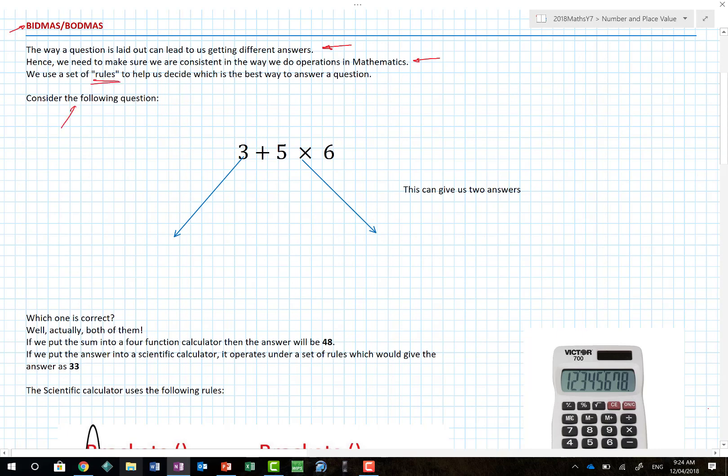So I like to highlight it with the following question. This question 3 + 5 × 6 can actually give us two different answers. And you're gonna go no it really can't. Well that's good if you're saying that. The chances are you already know about BIDMAS, BODMAS or whatever else.